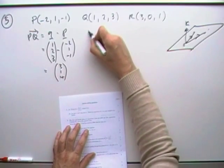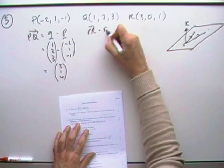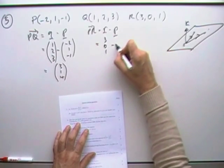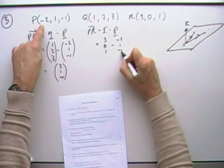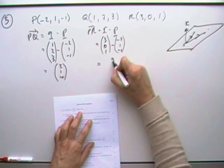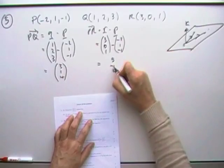And then I'll get PR, which will be R minus P, which will be (3, 0, 1) minus (-2, 1, -1), which will then be (5, -1, 2).